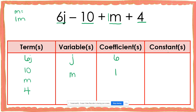Now I'm going to look for constants. Constants are any terms that do not have variables. I notice that there is a term of 10 and also a term of 4 that do not have a variable. Both of these would be considered my constants.